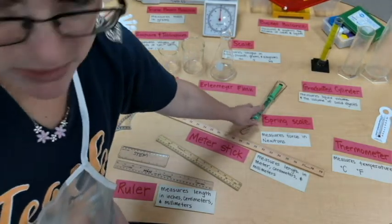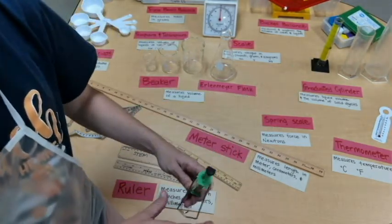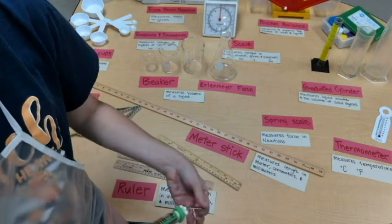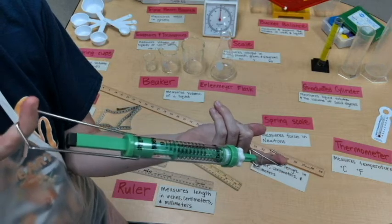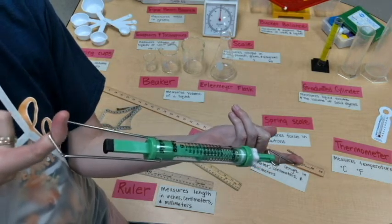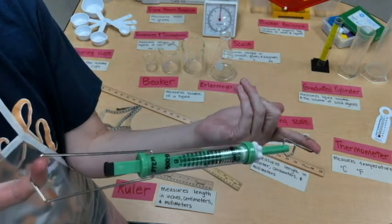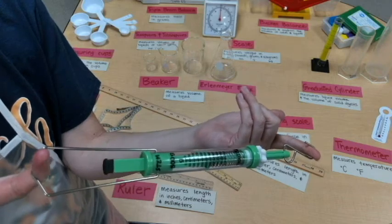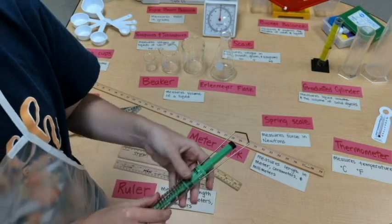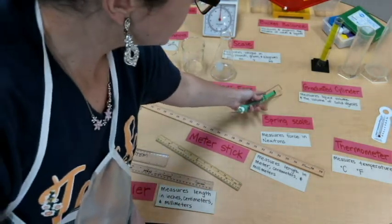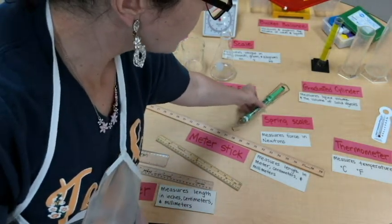Over here is our spring scale. And you would hook an item to the spring scale, and then you would use your hand to pull. And as you can see, that spring moves inside, and you're able to get a good measurement of the force used to move objects.